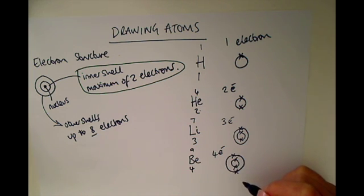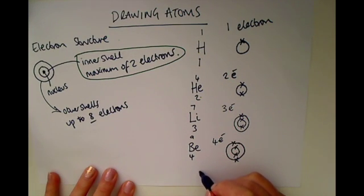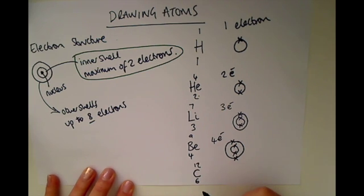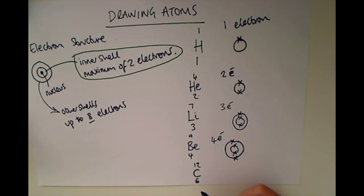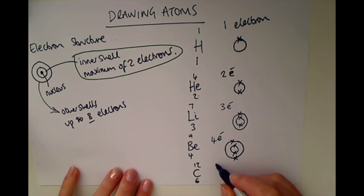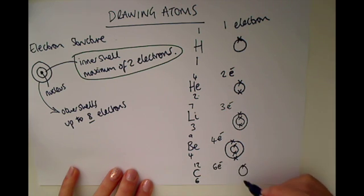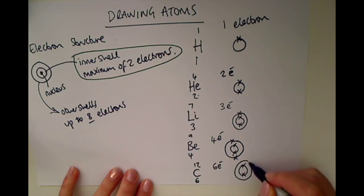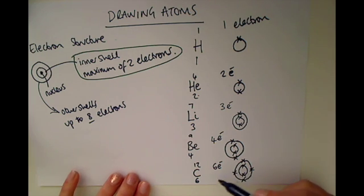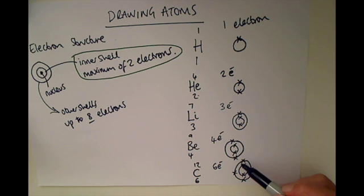Now have a go at drawing carbon yourself. Carbon has a mass of 12 and a proton number of six. Pause the video and try drawing the electron structure of carbon. So you should have seen that carbon has six electrons. We start building up: it's got two on the inner shell, and on the next shell up it has four electrons, giving six electrons in total.